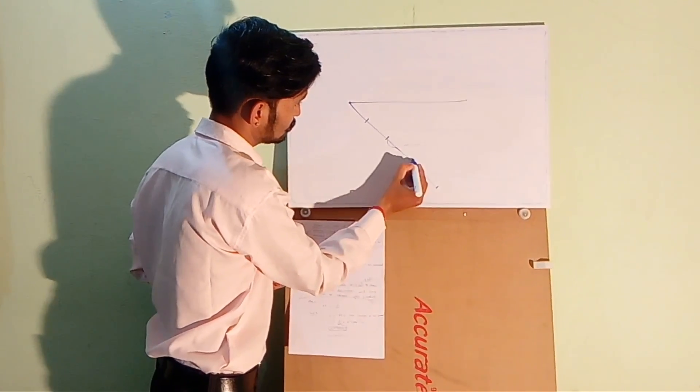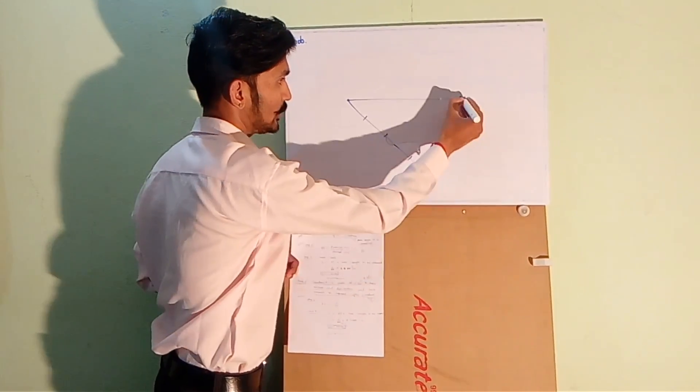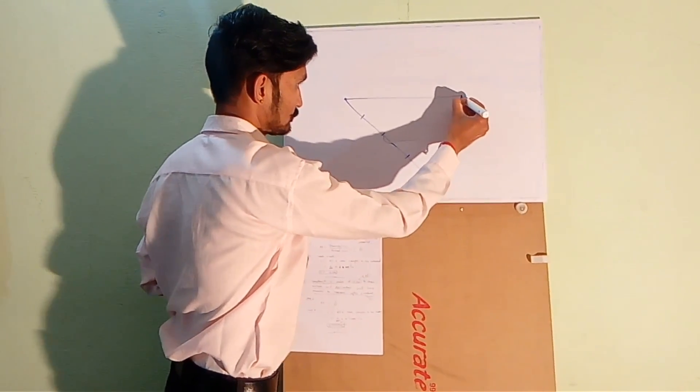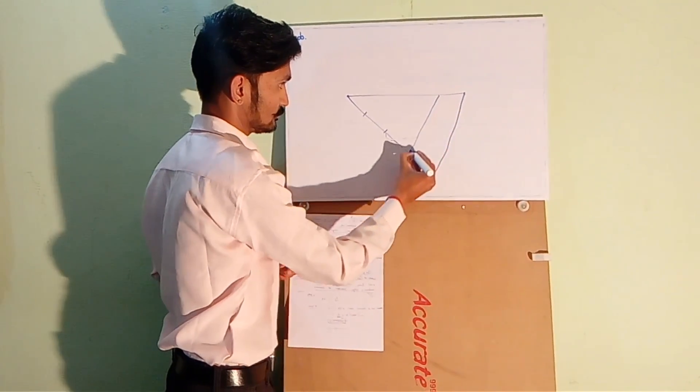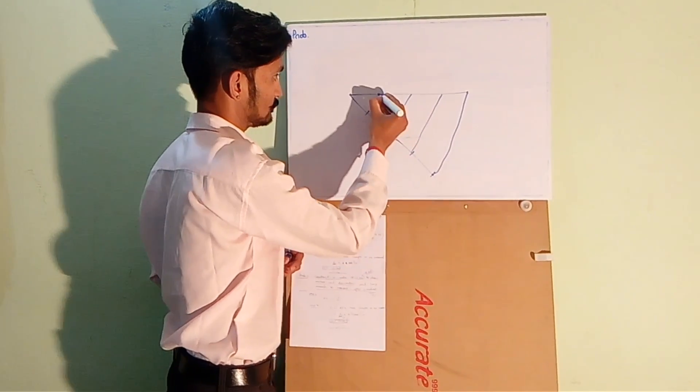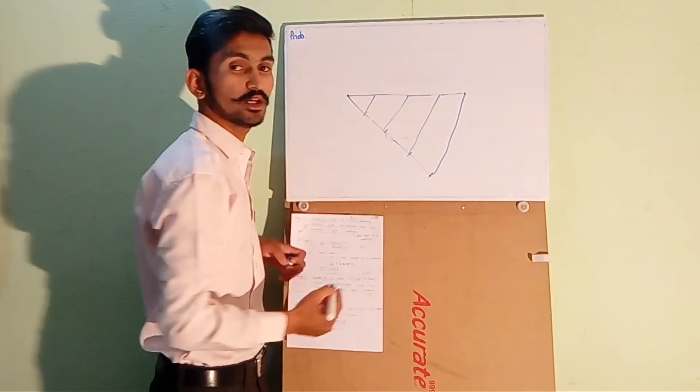So divide this line into 4 equal parts: 1, 2, 3, and 4. Join these 2 points. Draw parallel lines from each point. So these equal parts are showing 1 meter.